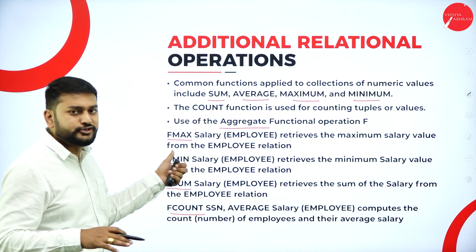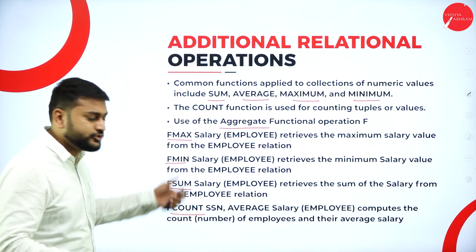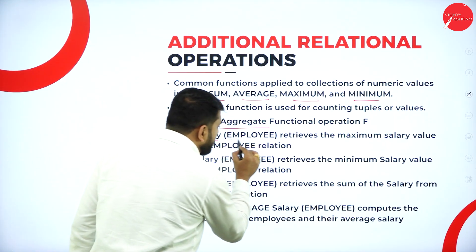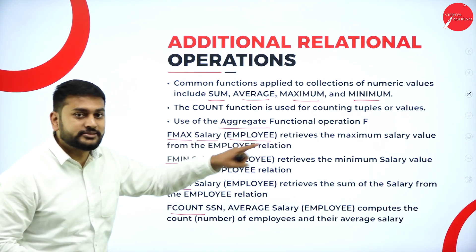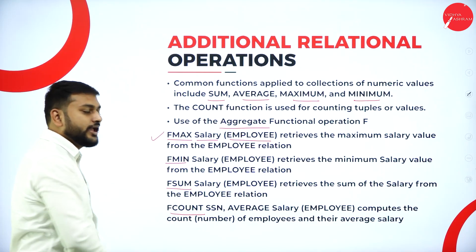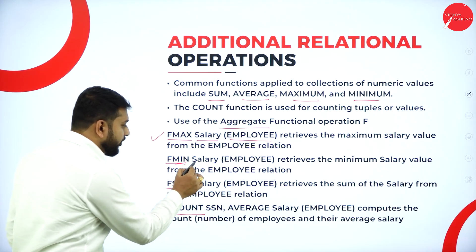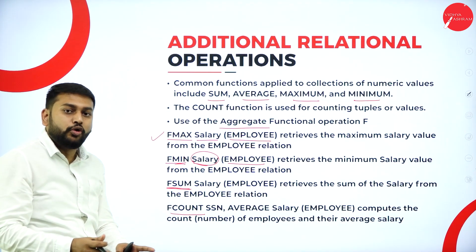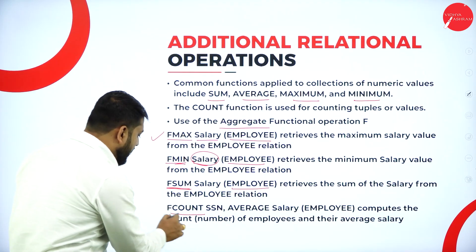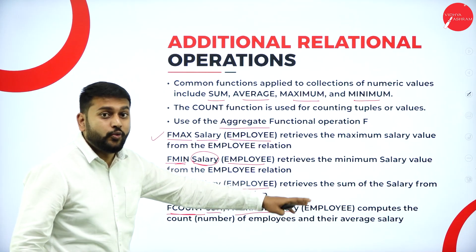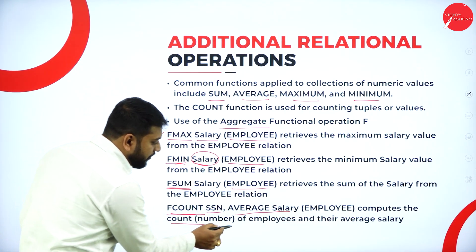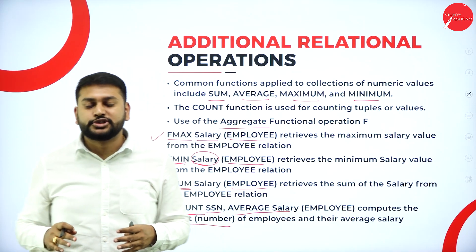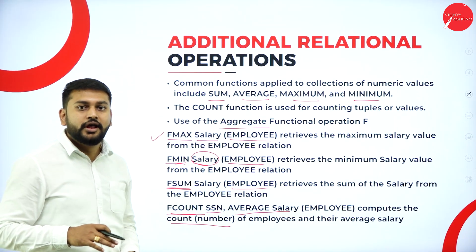It's pretty simple to remember. So how do I write the syntax? F max salary — salary is the column name — from the employee relation: this retrieves the maximum salary value. F min salary from employee retrieves the minimum salary. F sum salary from employee calculates the total salary. F count SSN, average salary from employee computes the count of employees — basically we use the count function to count the number of tuples. This is what you need to remember for the additional relational operations.